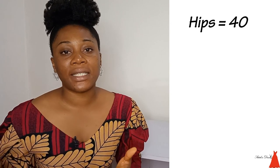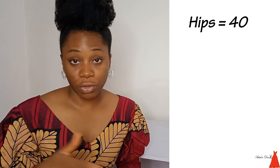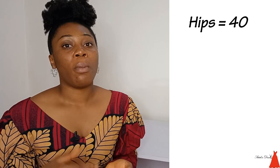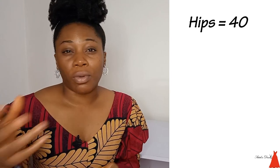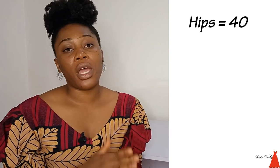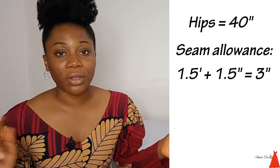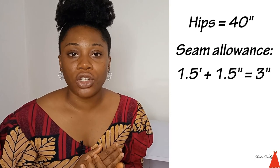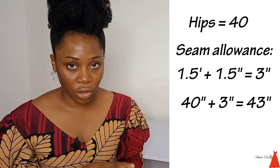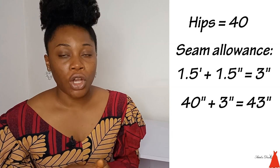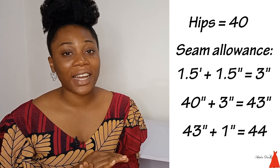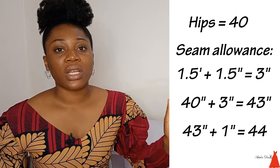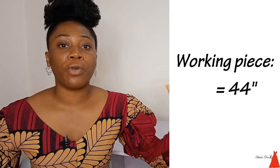Then you ask yourself: how many inches of sewing allowance do I want to give? Most people give one inch, but I always advise beginners to do 1.5 inches because we may run into mistakes. So 40 inches plus 1.5 inches on both sides gives us three inches total. Then I like to add one extra inch, which brings us to 44 inches. So when I want to cut, I know I am cutting 44 inches width of fabric.